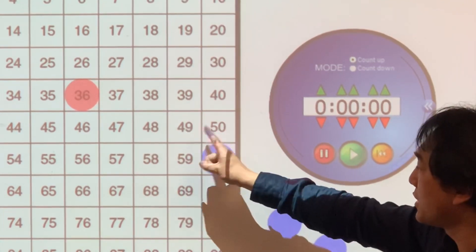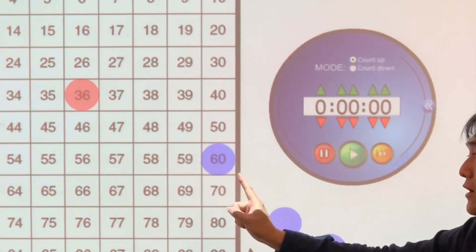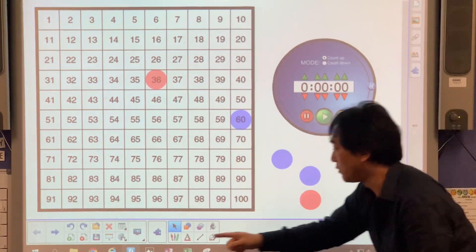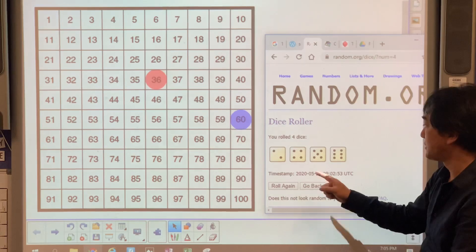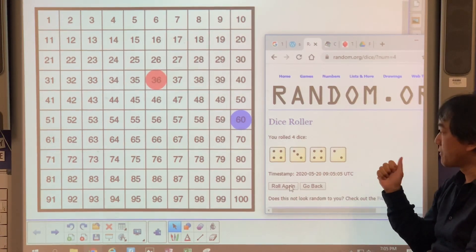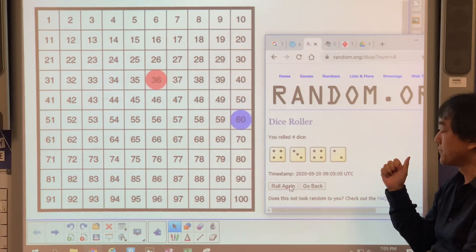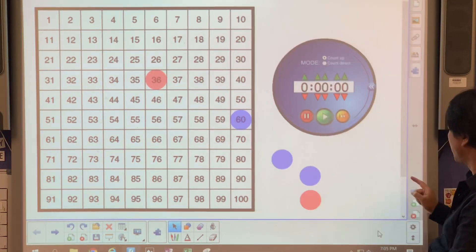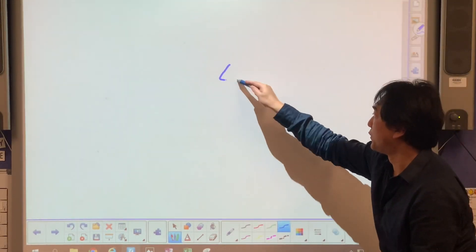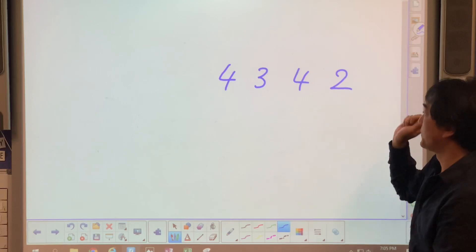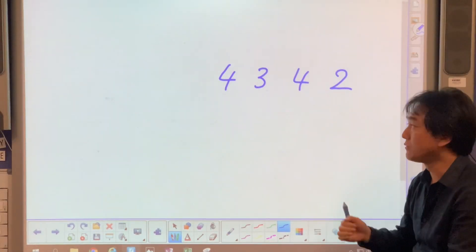That's a tricky bit. So let's roll four dice to start with. Four, three, four, two. It's a lot easier if you're looking at the game board.